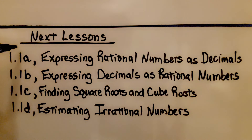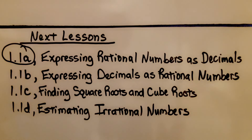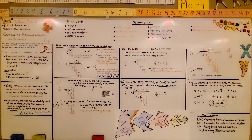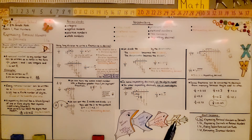We're finished with the first part of the lesson. We're going to be moving on to the second part, 1.1b — expressing decimals as rational numbers. Make sure you know the difference between real numbers, rational numbers, integers, whole numbers, and natural numbers. For eighth grade, you should know these by now. I hope you have a wonderful day and join me for the second part of the lesson.